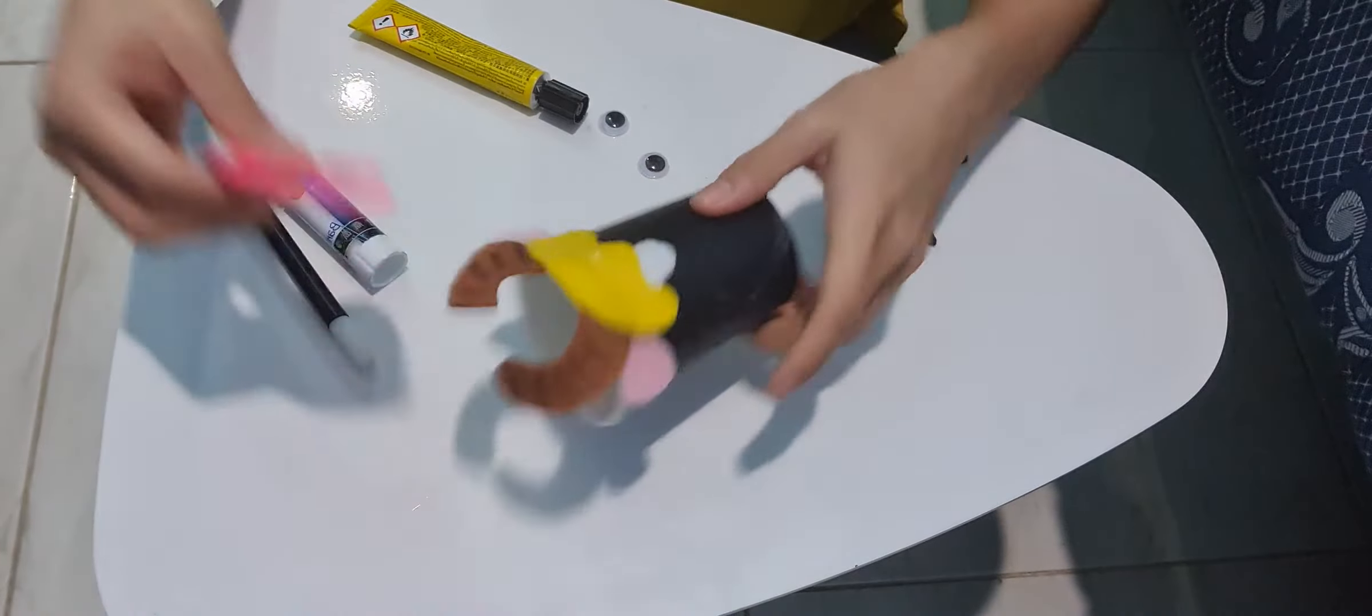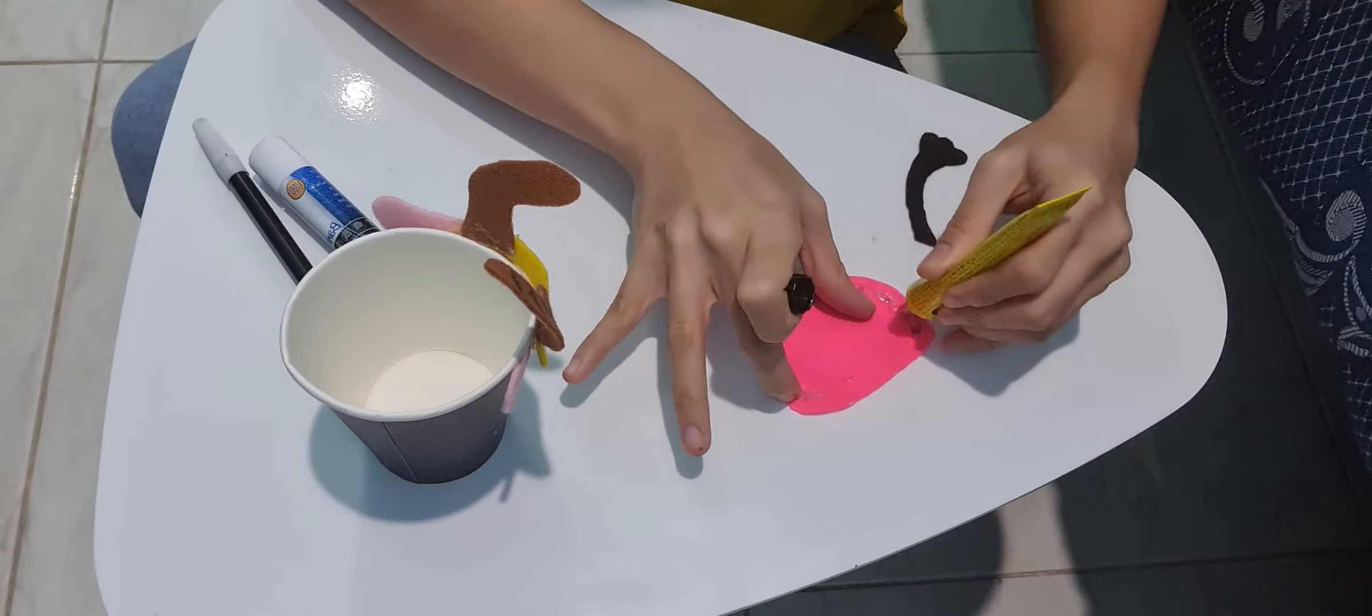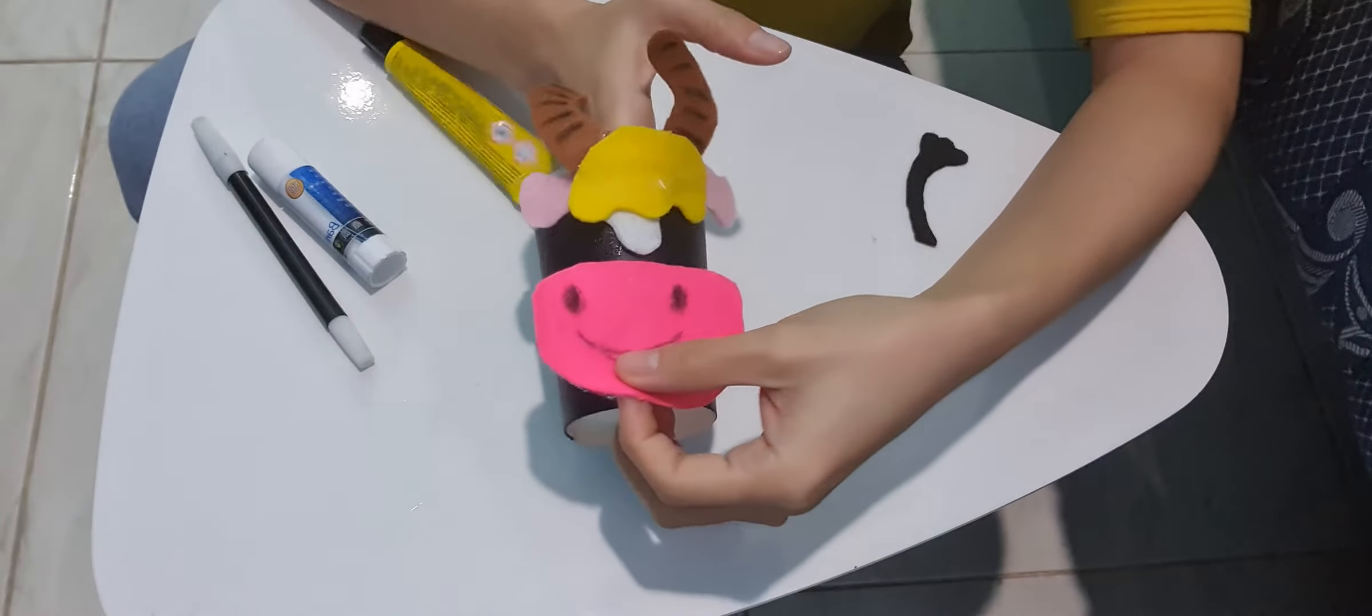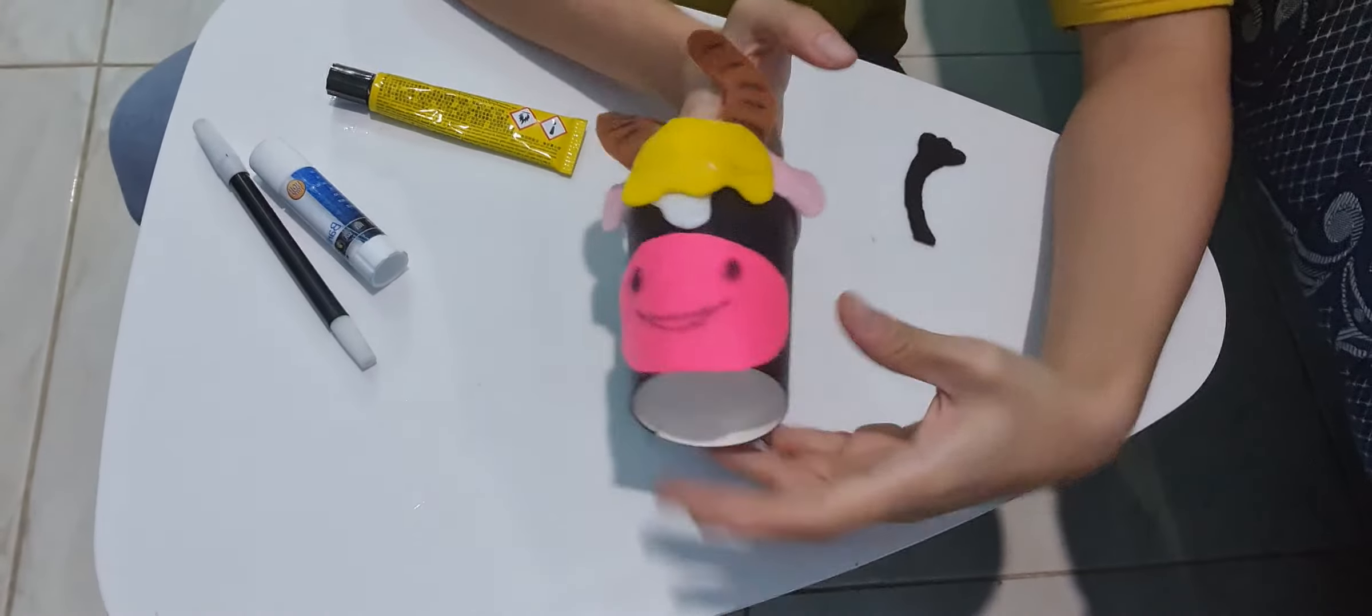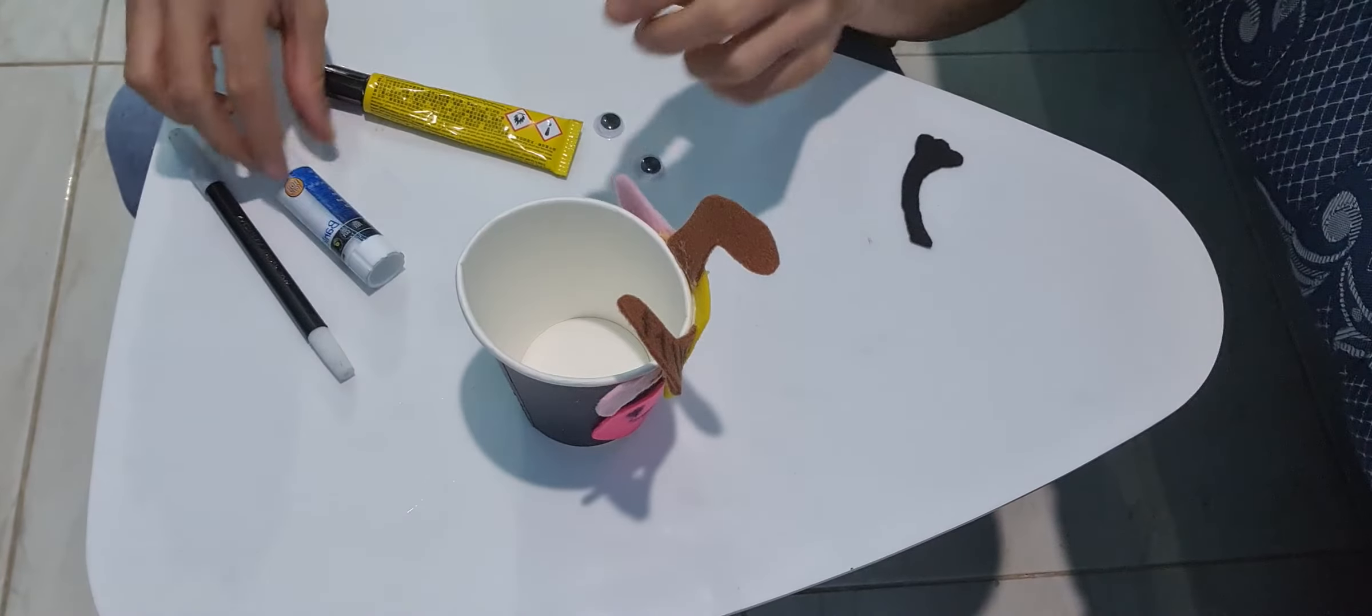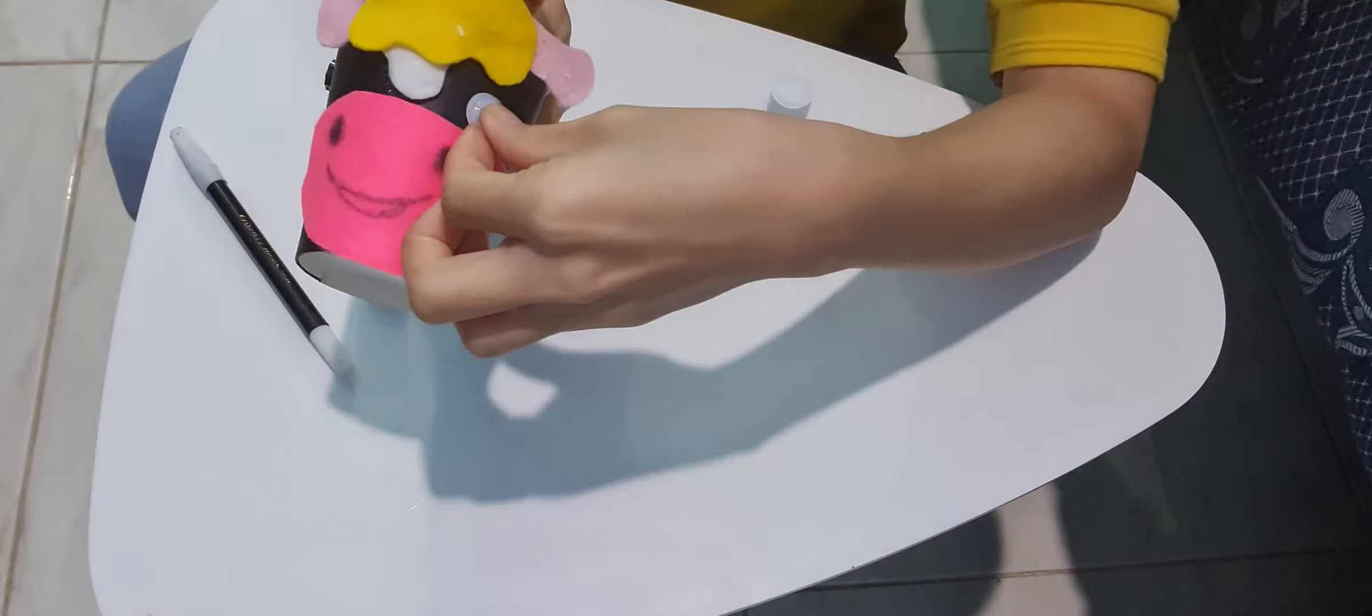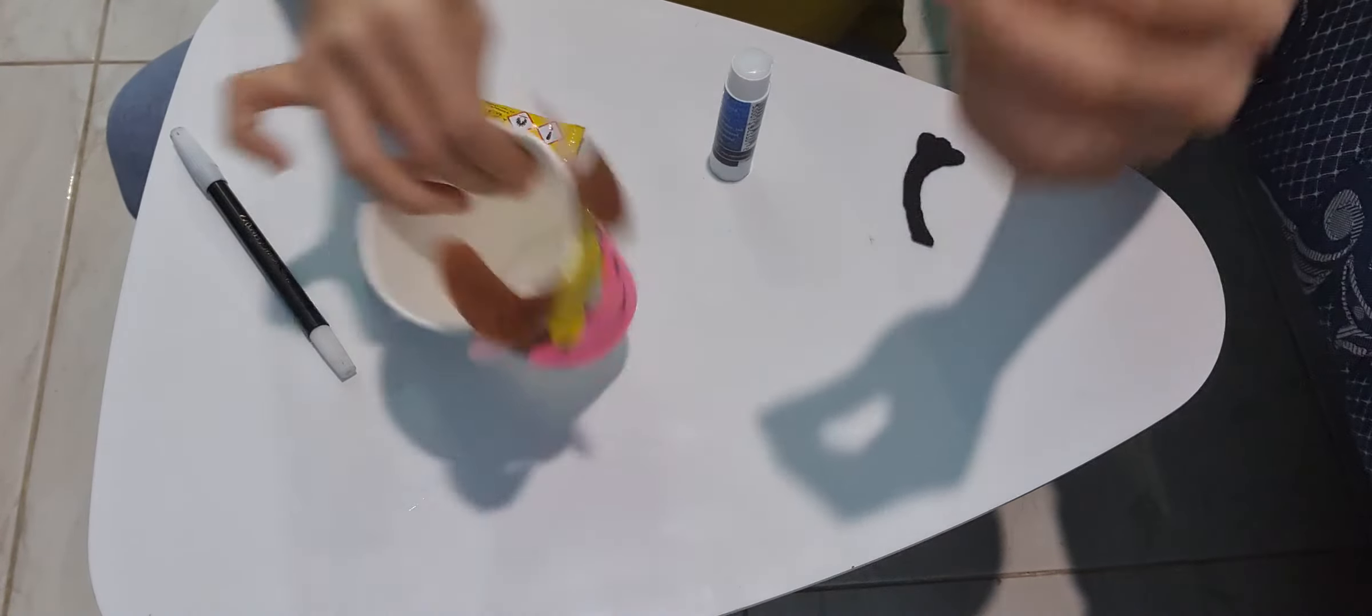Okay, now let's paste the mouth. Let's paste it below here. Let the wiggle eyes. I'm going to use the other glue. One in here, the other one over here.